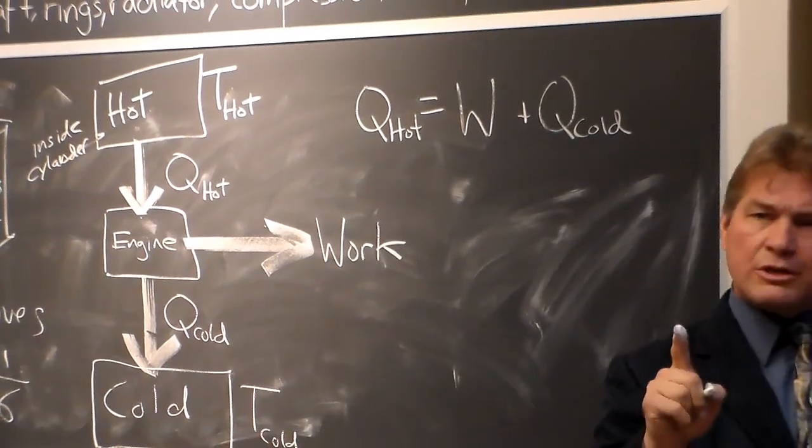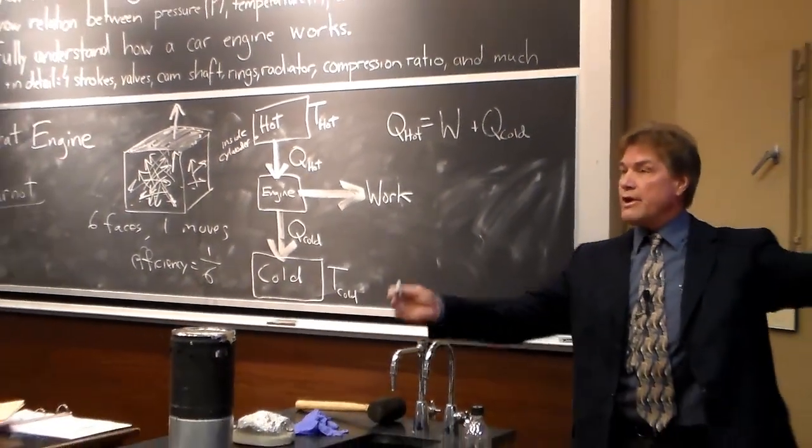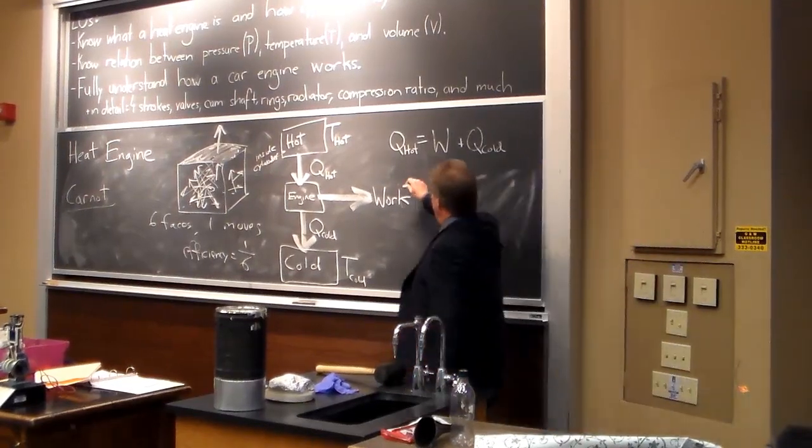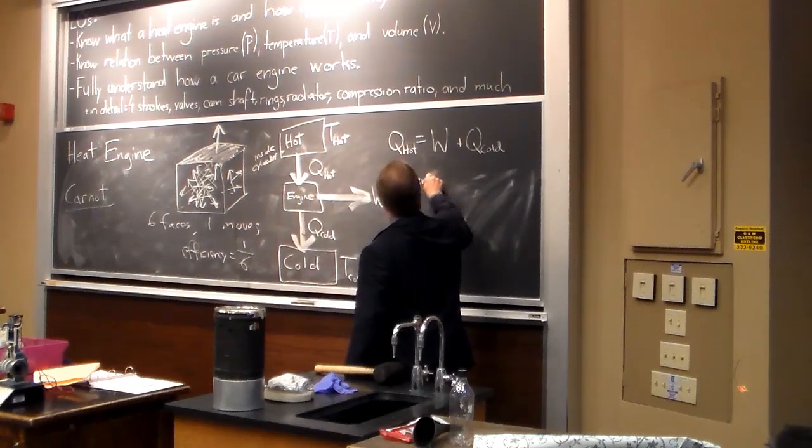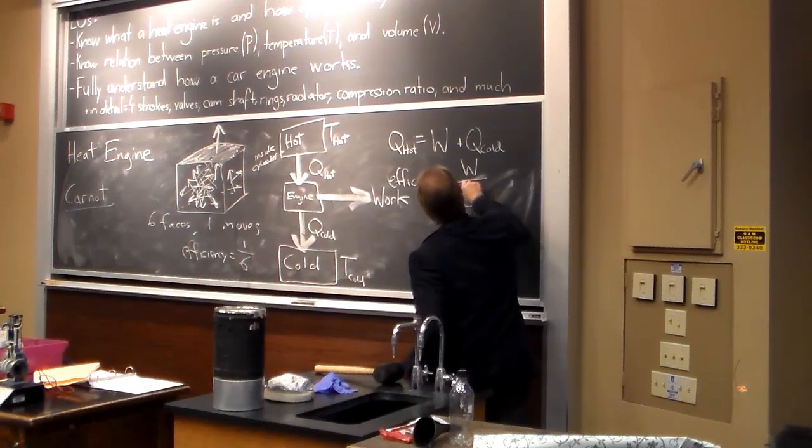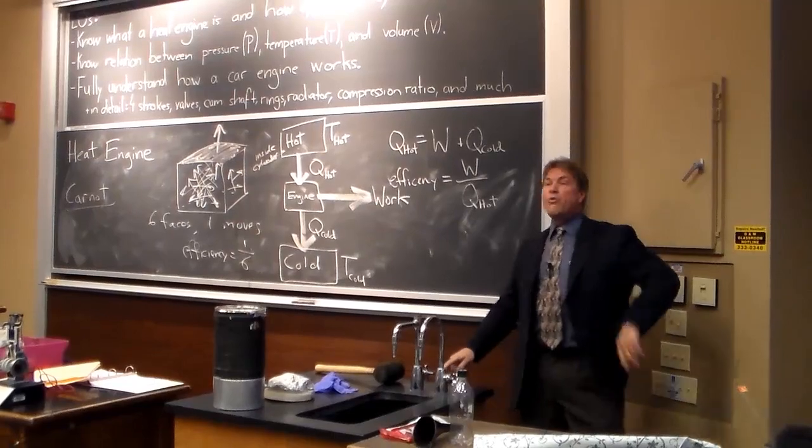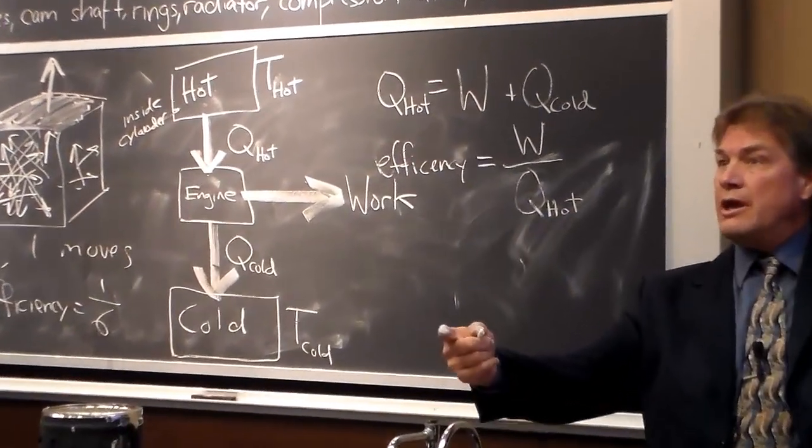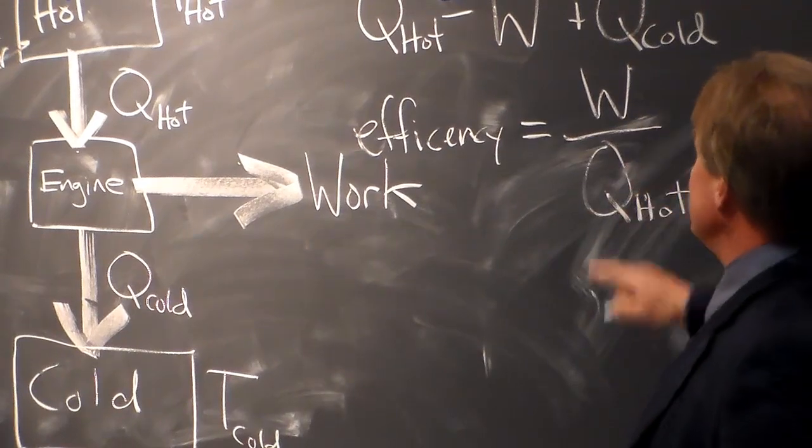If I want to make a really efficient engine, if I want to make an engine that works well, I want to get a lot of work out for every bit of energy I put in. That's actually my definition of efficiency. So I will have efficiency is equal to the work I get out versus the heat I put in. If that's 100 percent, and one, one is your highest efficiency. Think of it as 100 percent. All the work I put, all the energy I put in, I get work out. That's wonderful. This kind of engine, this number is one sixth.